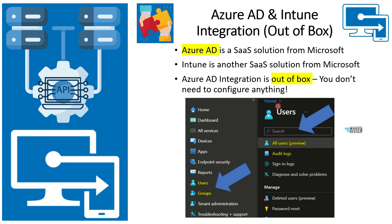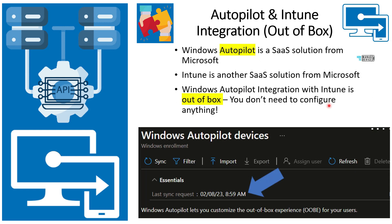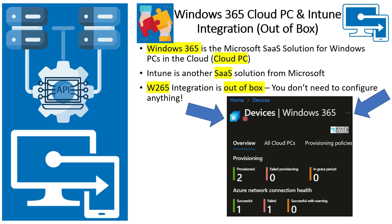The Azure AD integration is out-of-box — the Intune admin doesn't have to do any configuration from either the Intune side or the Azure AD side. Similarly, Windows Autopilot is a very popular Windows enrollment solution provided by Microsoft, and it is automatically integrated out-of-the-box with Intune. From an admin perspective, there is no configuration required — you can see the last sync option, but this integration is out-of-box.